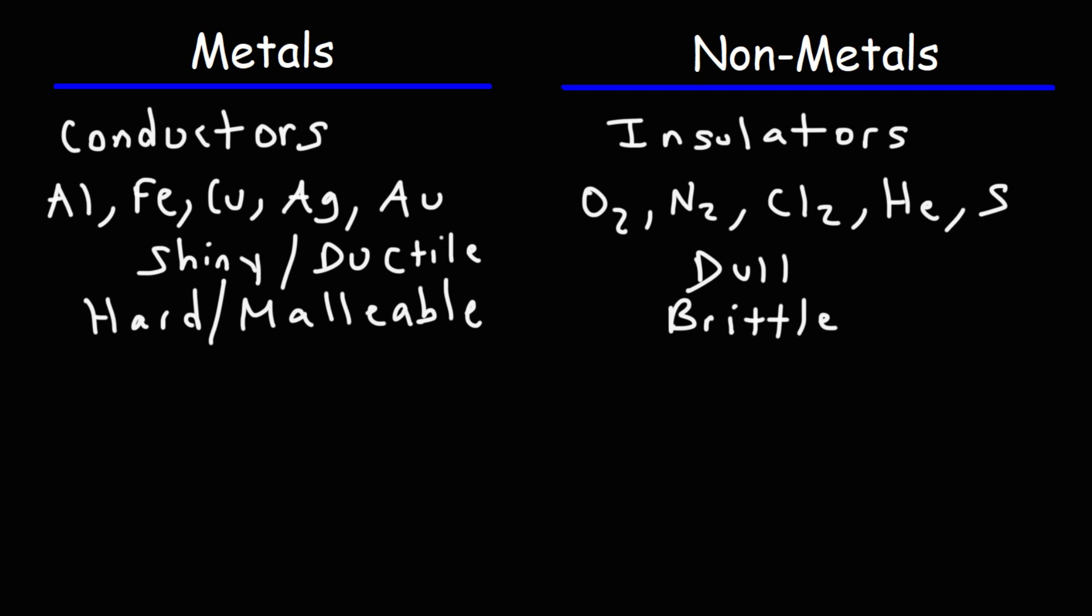Metals have another property. Most metals are reducing agents. Reducing agents, they like to give away electrons. Non-metals tend to be oxidizing agents. Think of the word oxygen. Oxidizing agents, they like to take electrons as opposed to give away electrons.